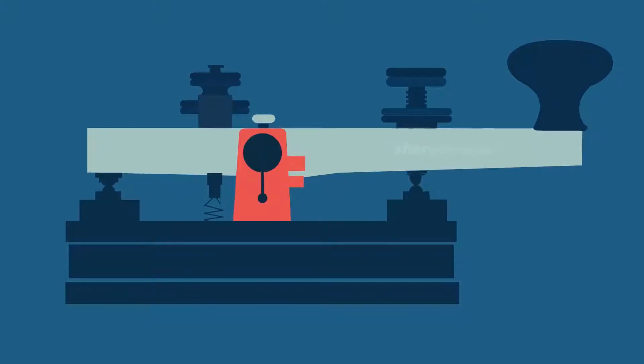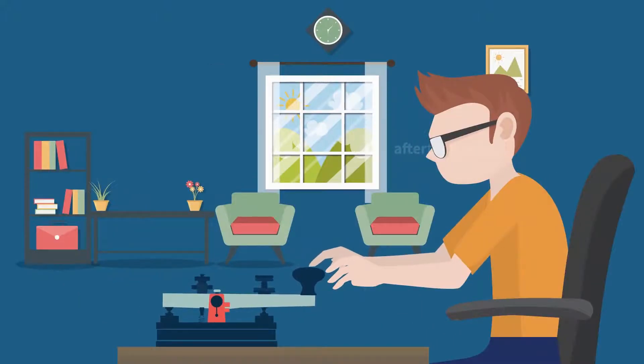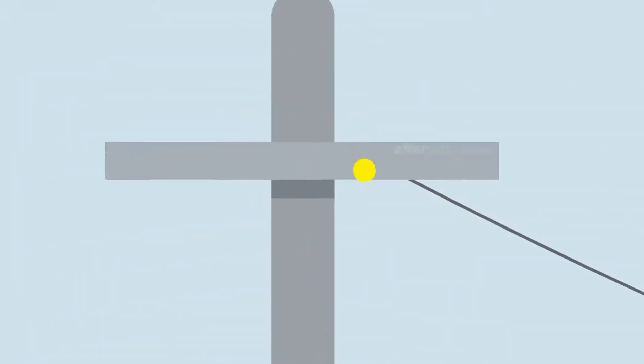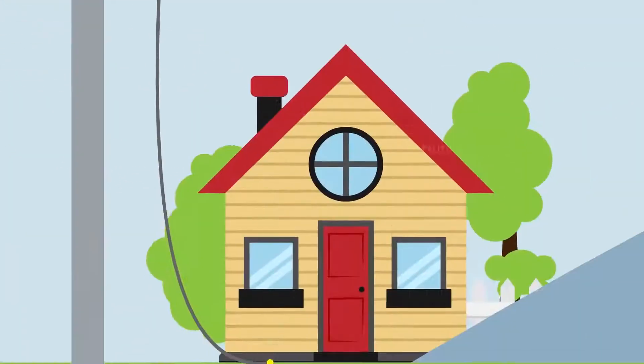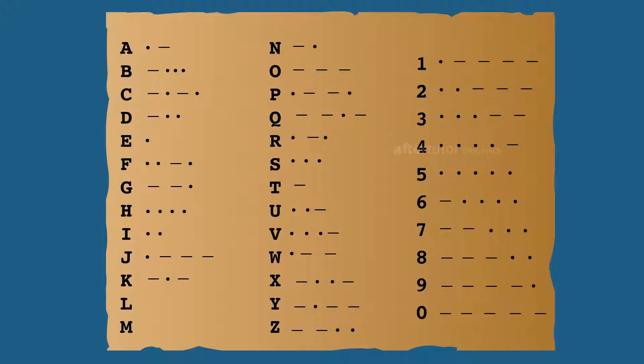In order to communicate over longer distances, the electrical telegraph was introduced, which worked by transmitting electric signals or impulses over a wire using Morse code.